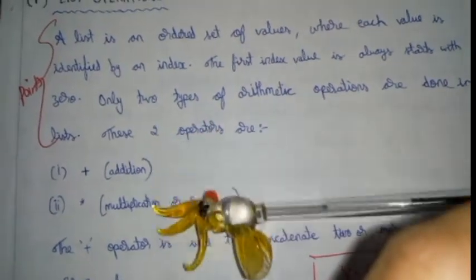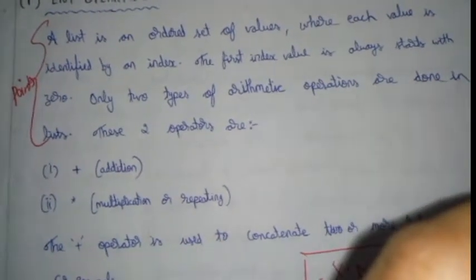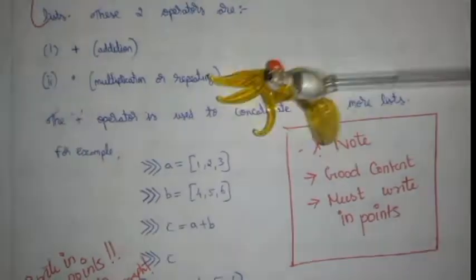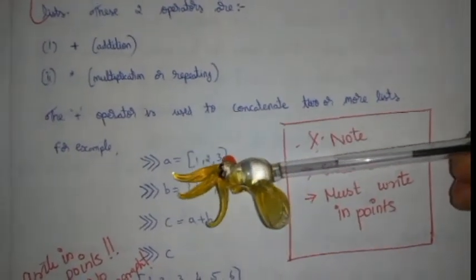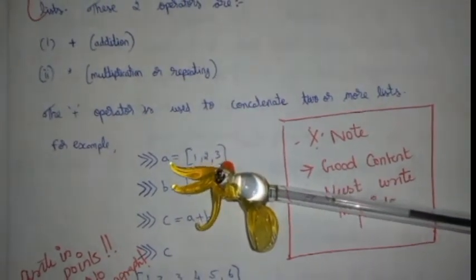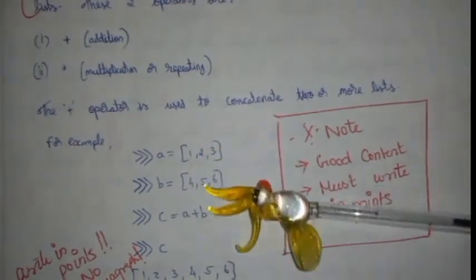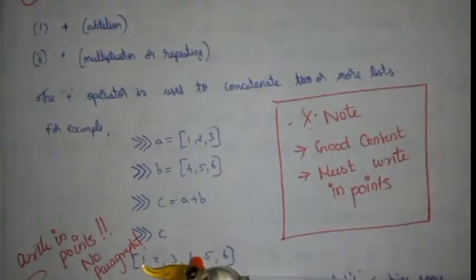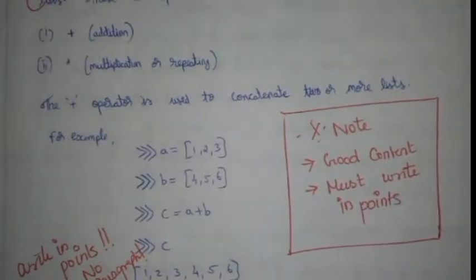The plus operator is used to concatenate two or more lists. So you're going to declare a list with A and B, and C equals A plus B. Then you will add all the elements in a list. This is about the addition operator for concatenation.